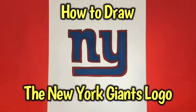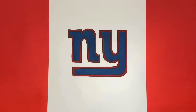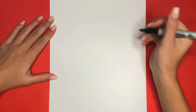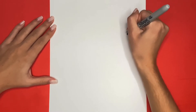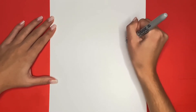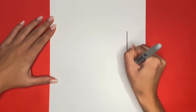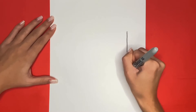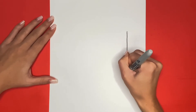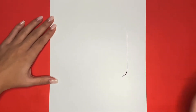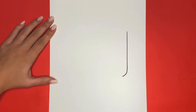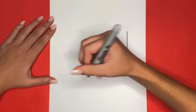How to draw the New York Giants logo! We are going to start by drawing a line going up and down on the right side of our page. Then at the bottom, this line is going to curve to the left a little bit. Then we are going to draw a line going from the left to the right of our page connecting to the line we just drew.